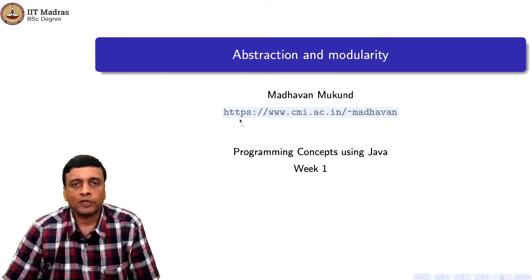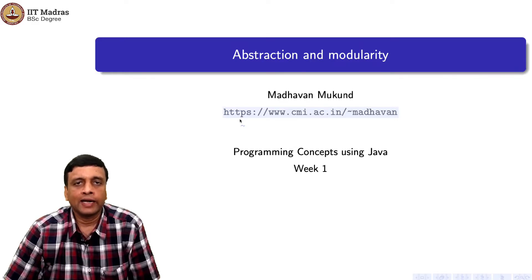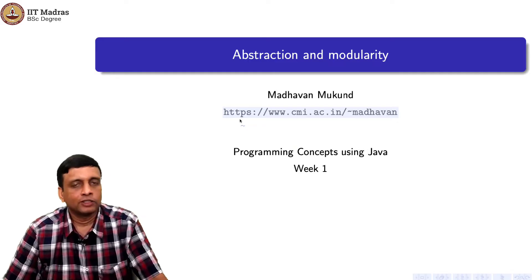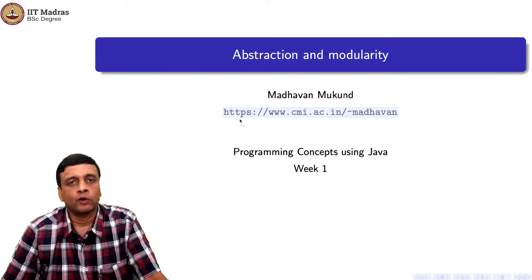Writing software is a complex process. We have to typically build large systems, and the only way to do it reliably is to abstract away from the details and build them in parts — that is, in a modular fashion. Let us look at abstraction and modularity and how we can embed them into a programming language.